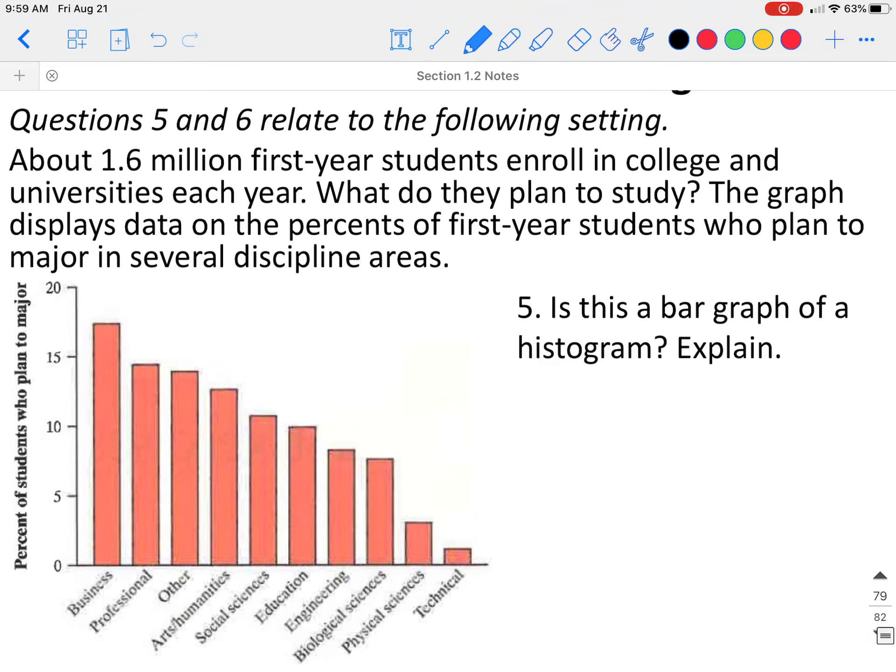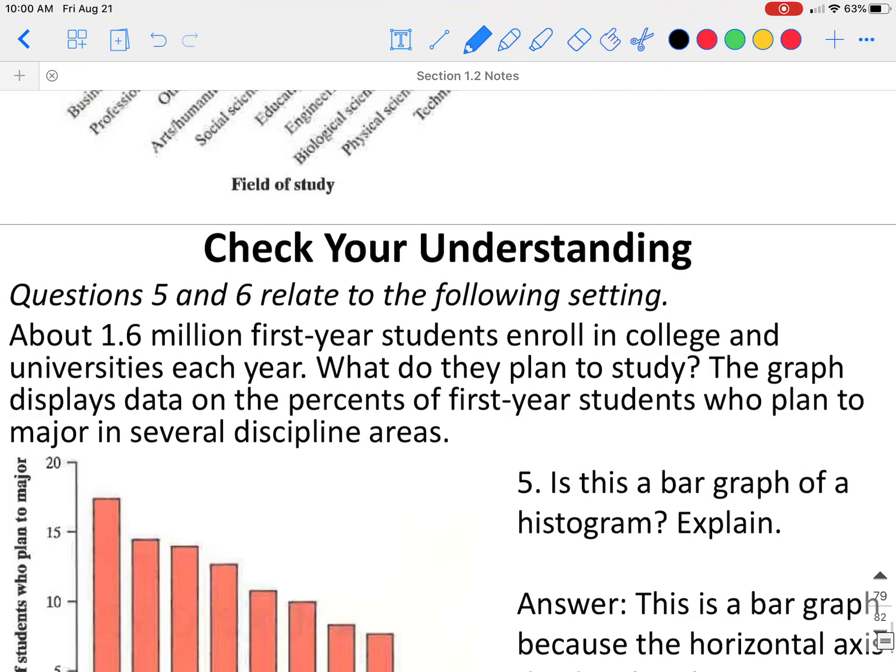For the next two questions, we are going to use the following setting. About 1.6 million first year students enroll in college and universities each year. What do they plan to study? The graph displays data on the percents of first year students who plan to major in several discipline areas. Is this a bar graph or a histogram? Because we are breaking them into different categories, such as business, professional, arts, and humanities. This is categorical data, which means this is a bar graph. Another way to tell is that our bars do not touch.